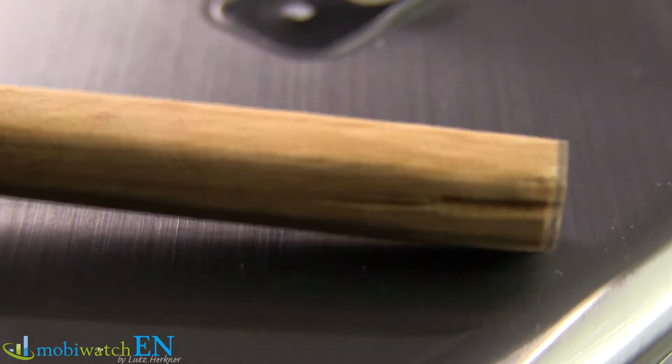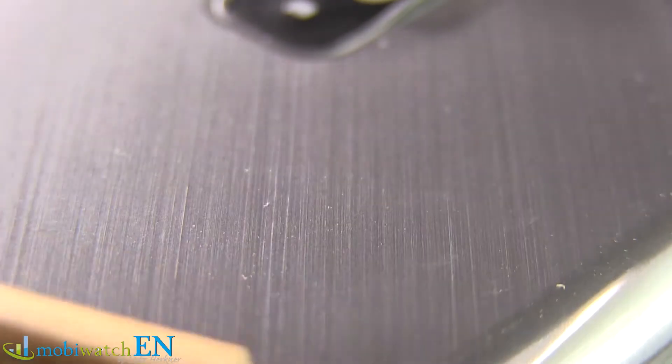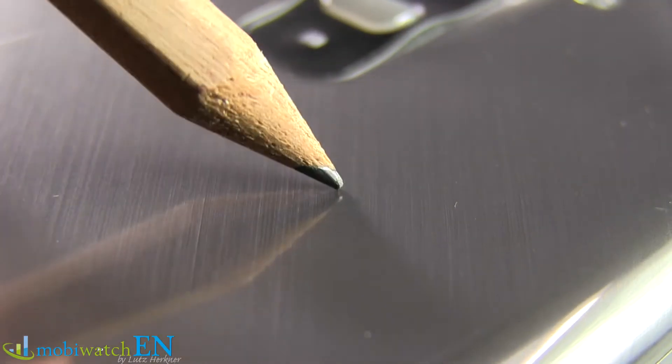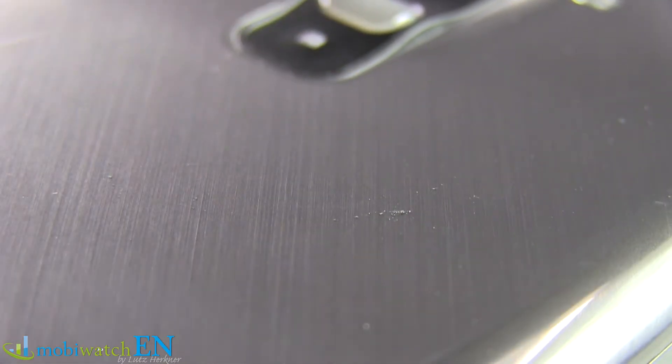Next we try the bowl of a wooden pencil, but that causes no scratches too, so we use the top afterwards, again with no success. So at least we can say that the surface of the rear side is not too sensitive.